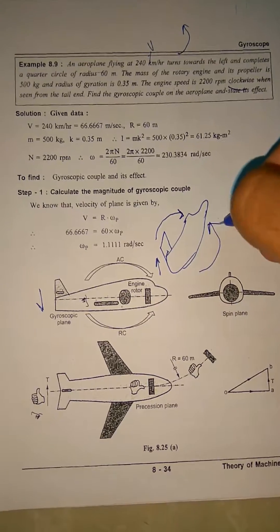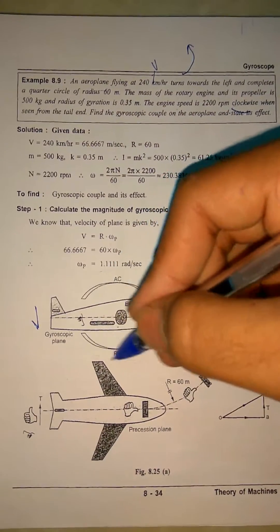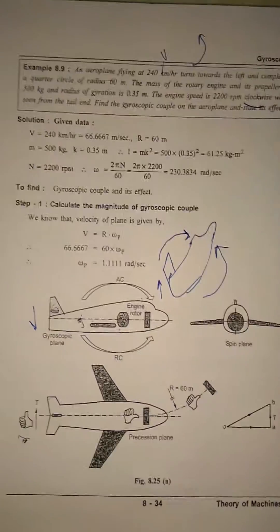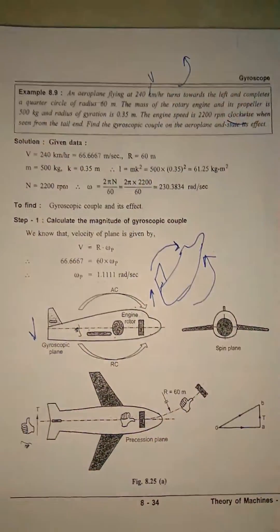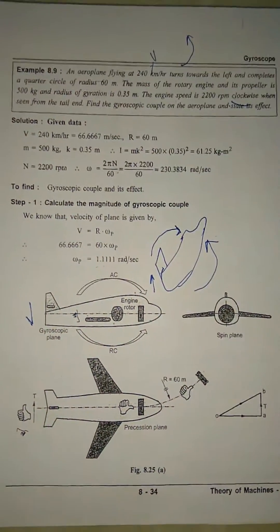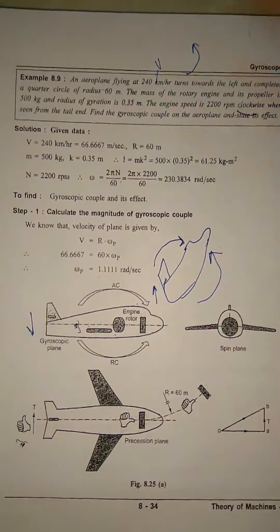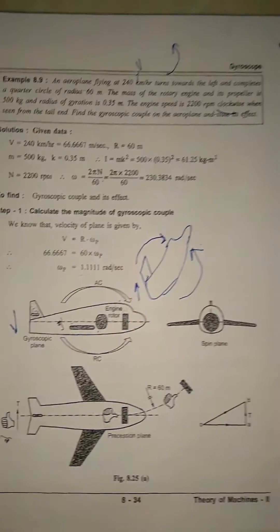This is active couple acting; this is the reactive couple. The calculations are the same: you find omega, you find I, v is given, r is given, you find omega_p, and you calculate T, which is I times omega times omega_p. Unit will be newton meter. That's all about an aeroplane.